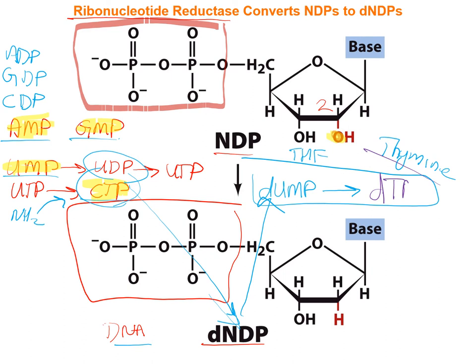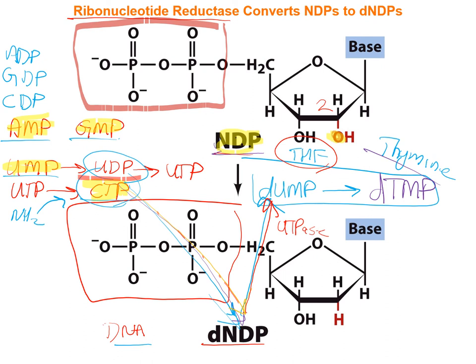We make the deoxy-TMP form from deoxy-UMP, which means UDP must get converted to deoxy-UDP — that's ribonucleotide reductase, which only works on the diphosphorylated form. Then deoxy-UDP has a phosphate stripped by the enzyme dUTPase, giving dUMP. Finally, dUMP gets converted to deoxy-TMP by thymidylate synthase, with the methyl donor being tetrahydrofolate.